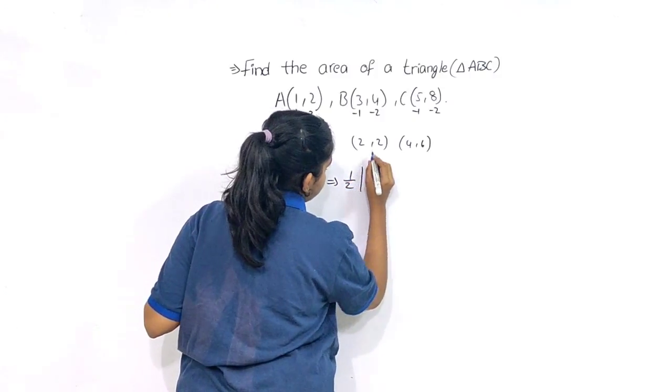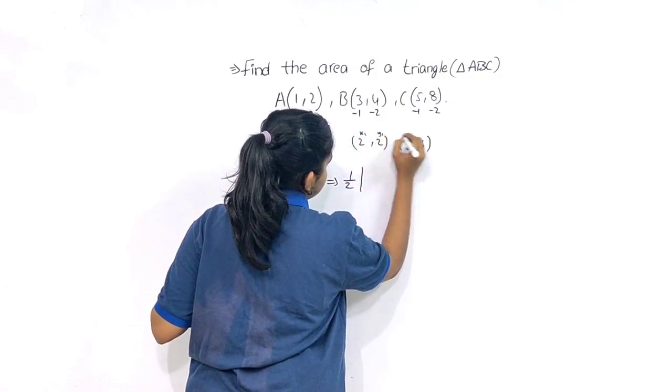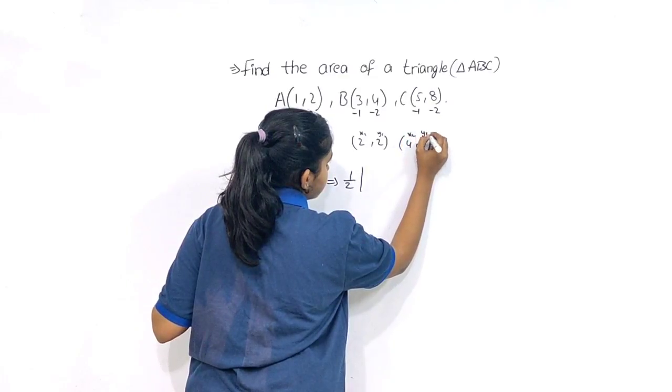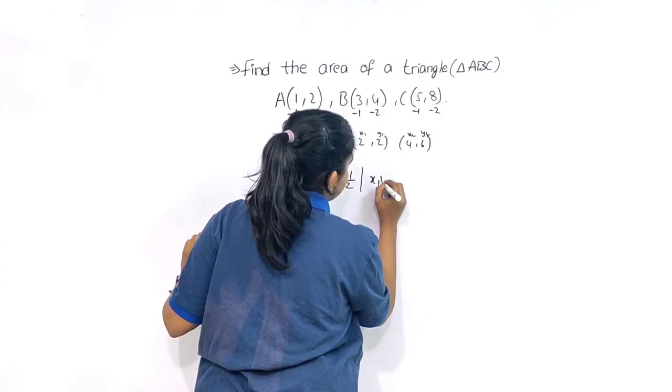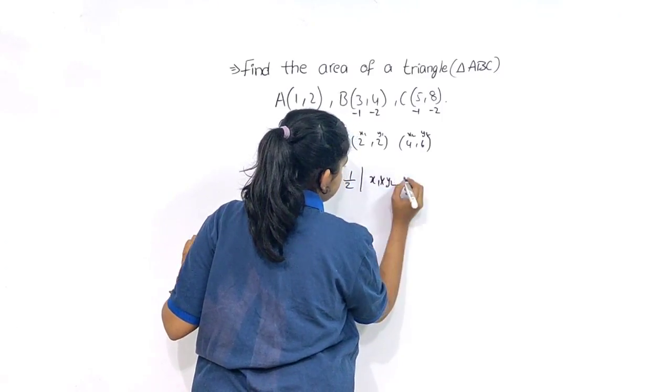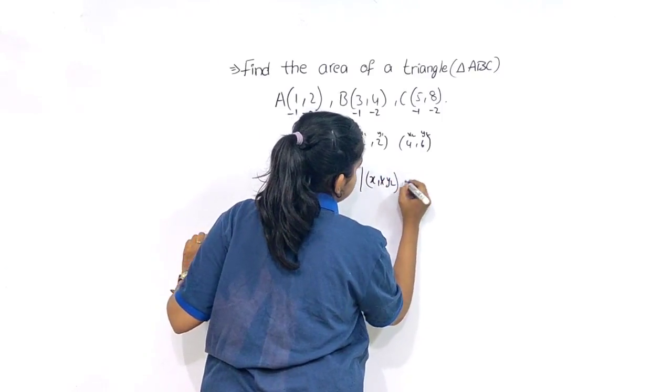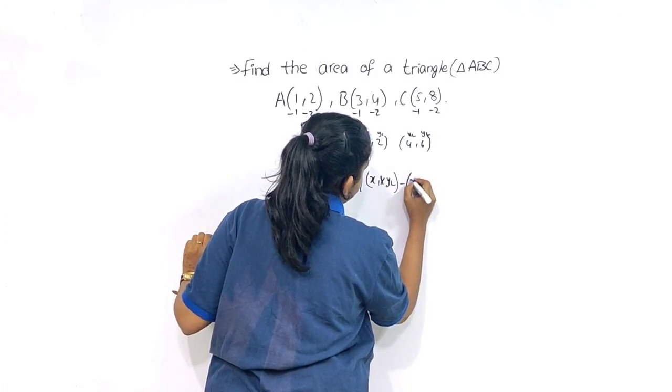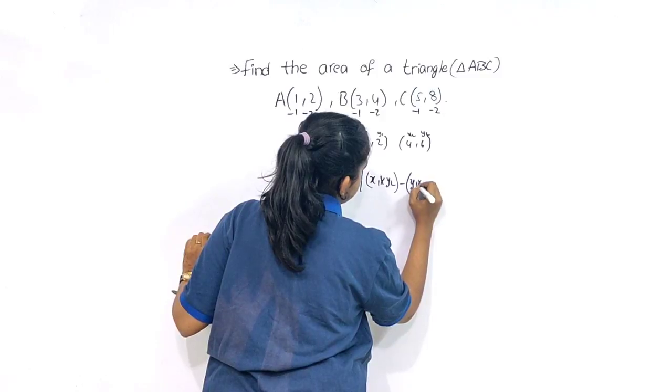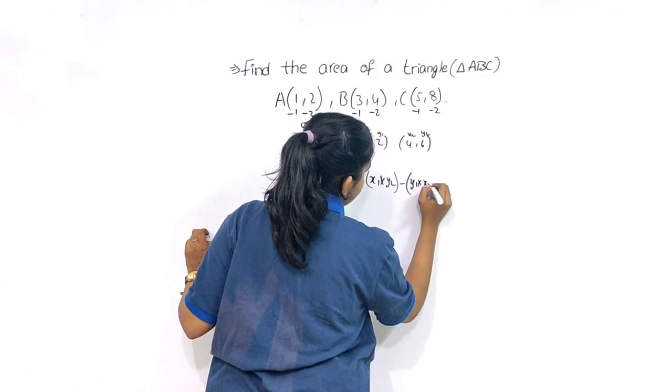Half modulus: x1 into y2 minus y1 into x2, modulus.